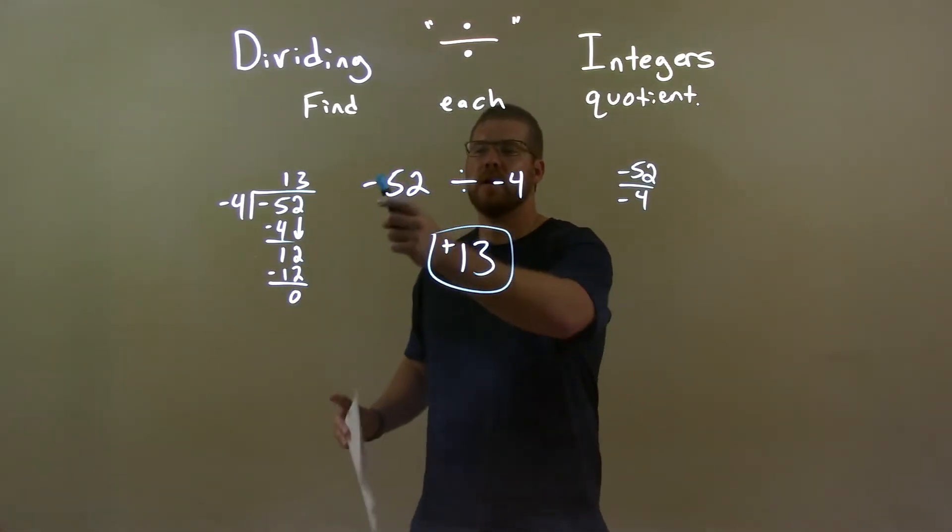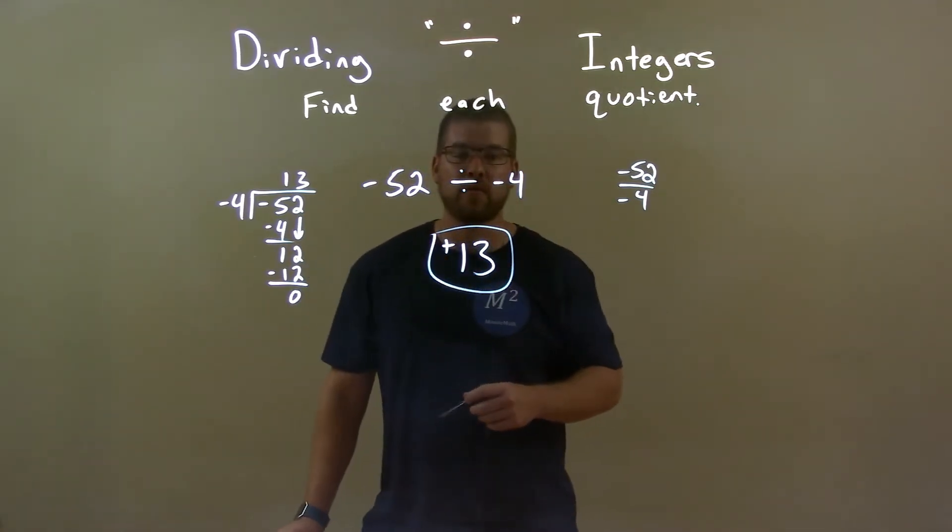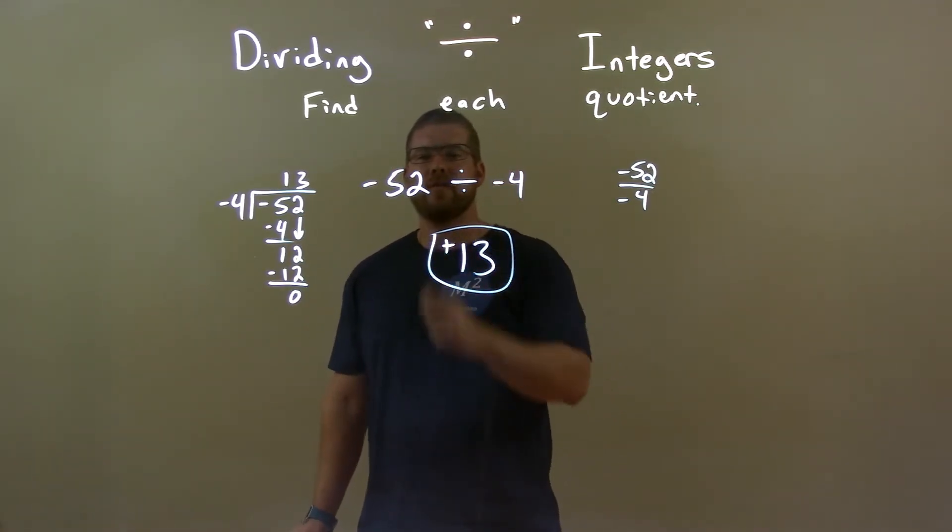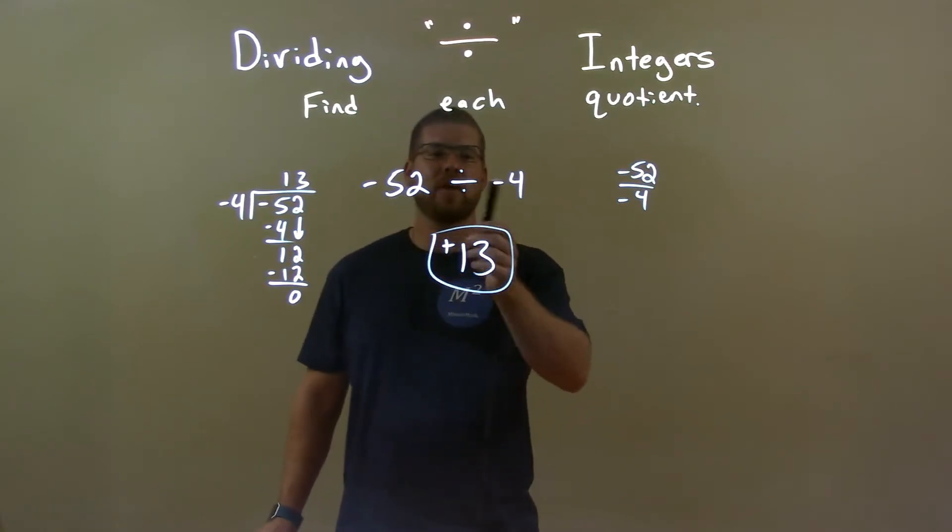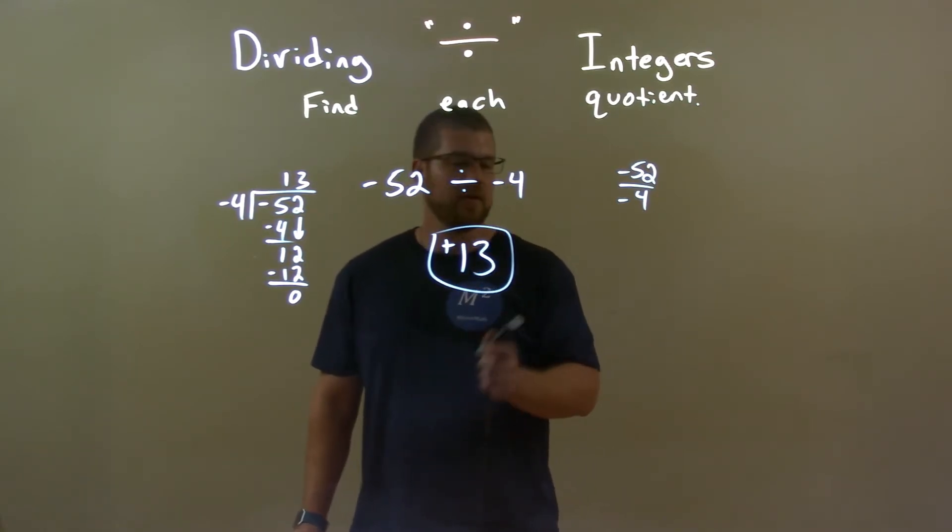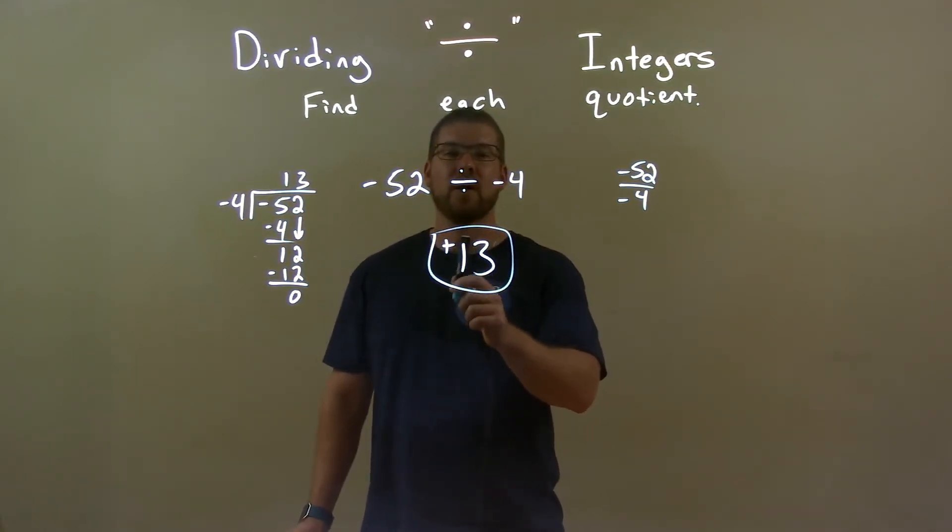So, quick recap. We're given negative 52 divided by negative 4. Well, we know 4 goes into 52 13 times, and a negative divided by a negative is a positive. So our final answer here is just positive 13.